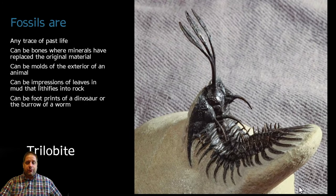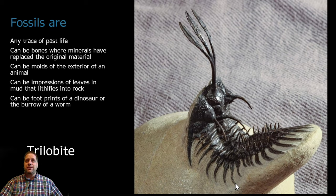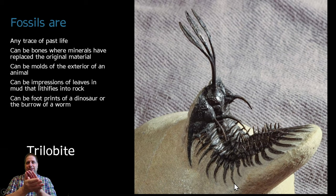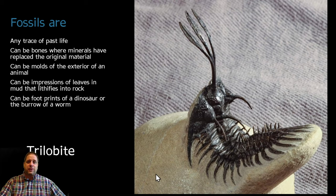Here's a great example of a fossil — this is a trilobite. Fossils are any trace of past life. They can be bones, or where the minerals in the bone have been replaced by inorganic minerals. They can be molds of the exterior of an object — like a shell impacted in clay, then when you open the clay it leaves a mold of the object inside.